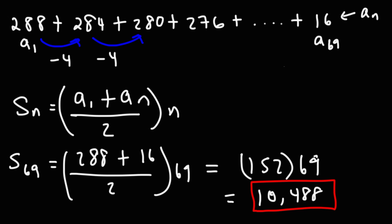And so that's how you can calculate the sum of this arithmetic series. For the sake of practice, I'll give you another one. So let's say we have the numbers 96 and then 89. Well, let's put a plus, plus 82 plus 75 and then plus 12. Go ahead and calculate the sum of that arithmetic series.